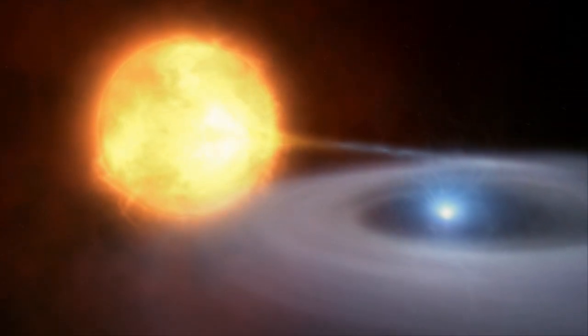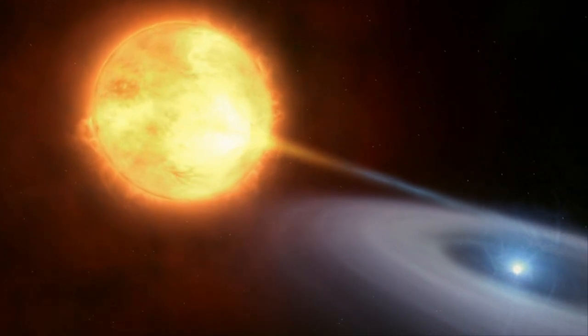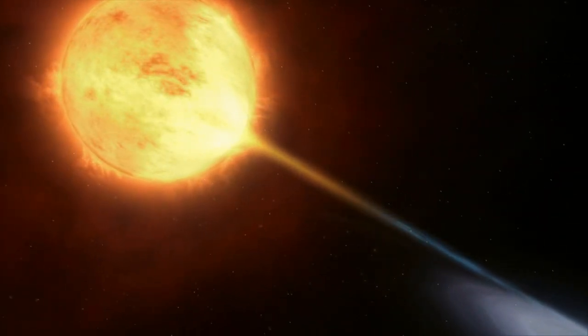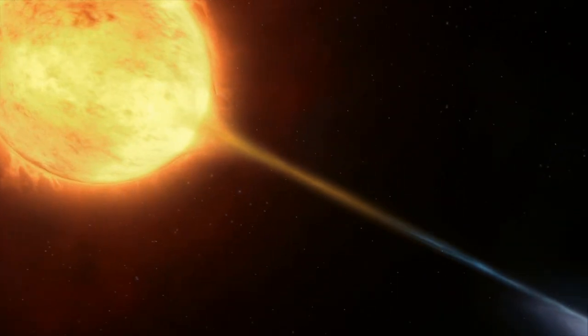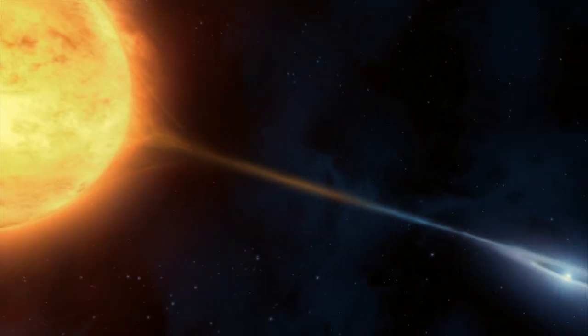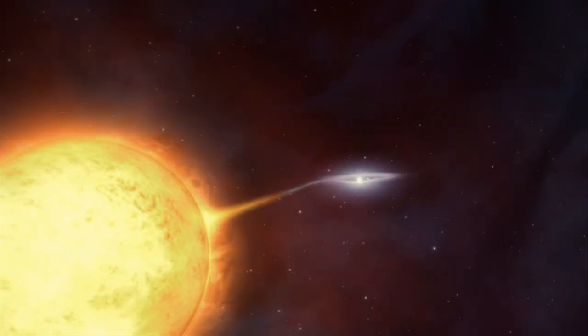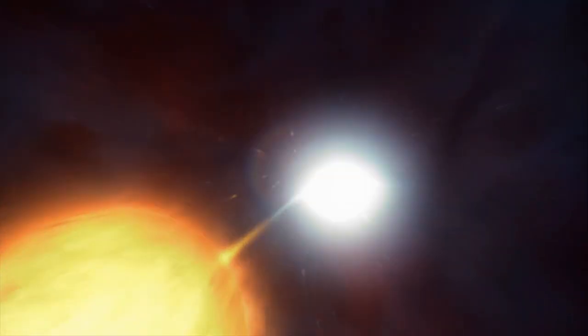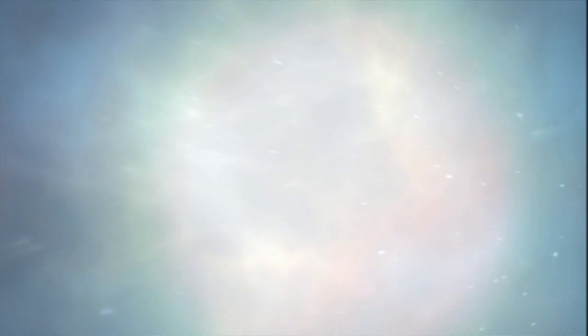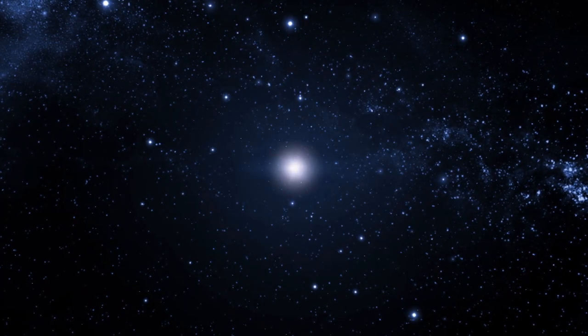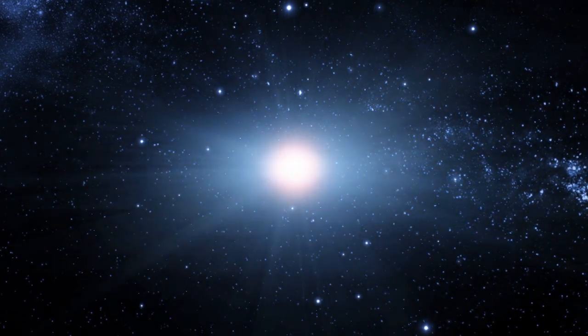As well as telling us about the star that has just died, supernovae are powerful tools for probing the cosmos. The supernovae that come from exploding white dwarfs have a peculiar property. They all have the same intrinsic brightness. This means that how bright they appear to a telescope is a measure of how distant they are, much like a street light looks bright when you're near it and dim when you're far away.